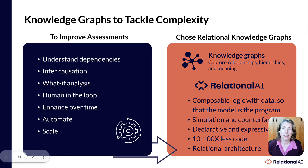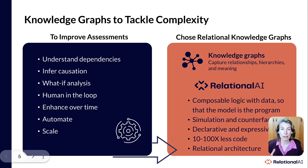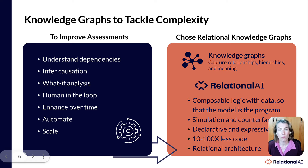If you're not familiar with a knowledge graph, think of it as a way to capture relationships, hierarchies, and meaning. What Relational AI added on top of that was the ability to have composable logic with the data, meaning the model is the program itself — executable knowledge components. Having that logic provides reasoning and causal inference, and the ability to do simulation and counterfactuals helps with what-if analysis. A declarative and expressive approach makes it easier for domain experts to understand and update logic, and you can generate code from the modeling itself, resulting in less code for automation and maintenance. The relational backend also makes scaling and integration into common workflows simpler.